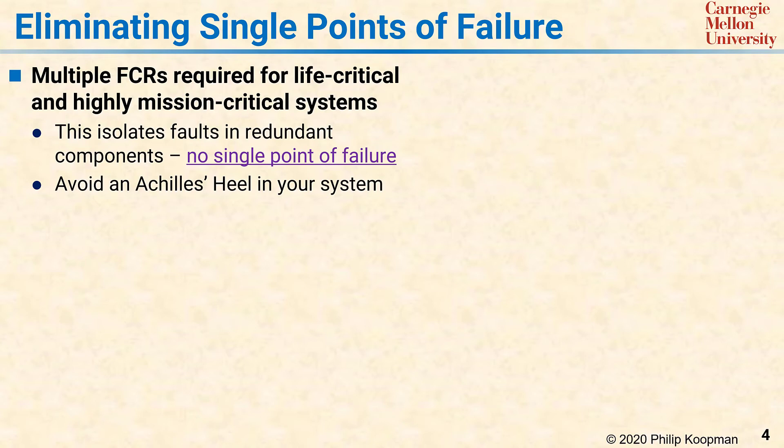Those paths should cross-check each other to catch inconsistencies and thus detect component failures. It is important to realize that two copies of the same software running on two CPUs will protect against hardware failures, but can still, for practical purposes, be a single point of software failure because software bugs will affect both CPUs at the same time.